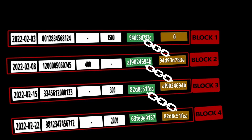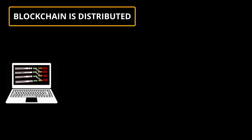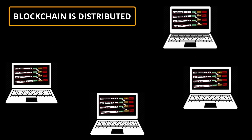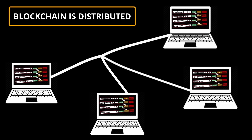Blockchain technology exists in software and the software runs on a computer. Blockchain is distributed, which means a copy of the blockchain is maintained on all the computers that are connected to each other and maintaining the blockchain. Because blockchain is distributed, even if the hacker is able to hack one particular computer and modify all the blocks on it, he will have to do the same on all the other computers, which is going to be extremely difficult.